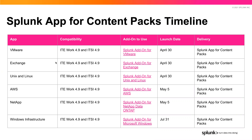We're starting with VMware, Exchange, Unix and Linux — those will be available on April 30th — and then AWS and NetApp by May 5th. It's looking like July 31st for Windows infrastructure. Again, these are forward-looking statements. We're very confident about the April 30th timeline, but if you're going to make decisions about your workflow and infrastructure monitoring functionality, please keep these dates in mind given that development is in progress.